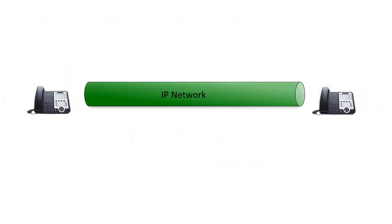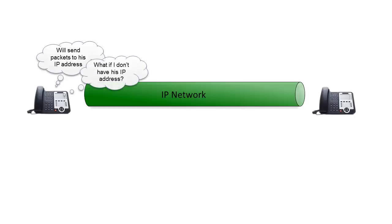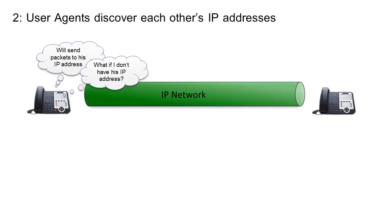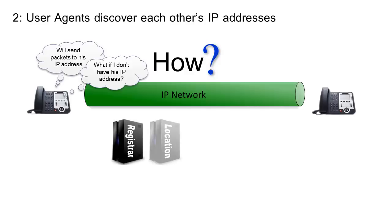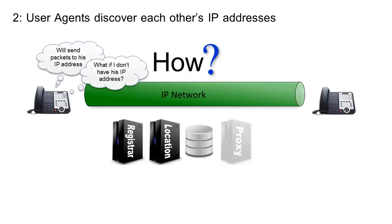Like all IP devices, user agents send IP packets to an IP address. But what if the user agent doesn't have the other party's IP address? That's need number two: user agents need a way to discover each other's IP addresses. They do it with help from the next four SIP entities — the registrar and location services, the SIP registry, and the proxy server.